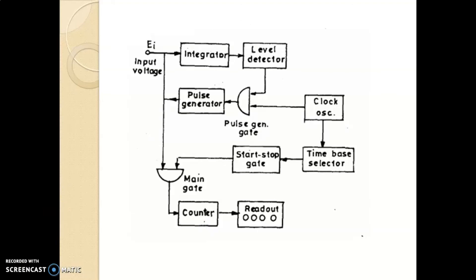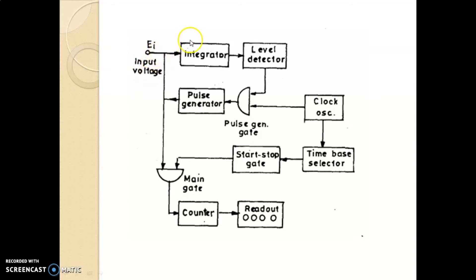Let's see another block diagram of the integrating type of digital voltmeter. This block diagram has two parts. In the first section, it is a frequency generator. In the second section, we have the input voltage measurement. The input voltage to be measured is applied to the integrator, and the output of the integrator goes to the level detector or comparator, which will change state continuously so that the pulse generator generates pulses at a regular interval.